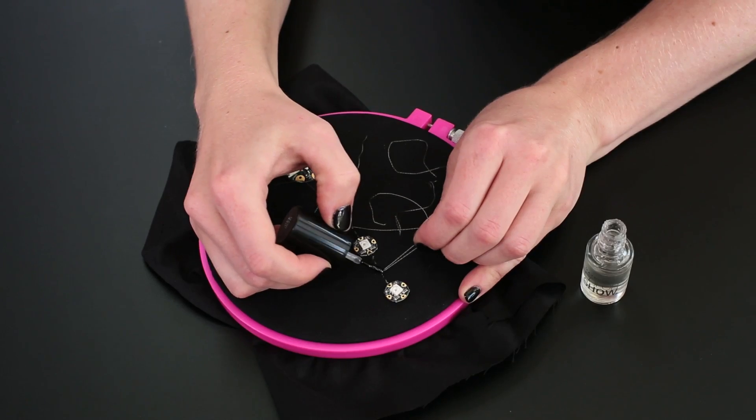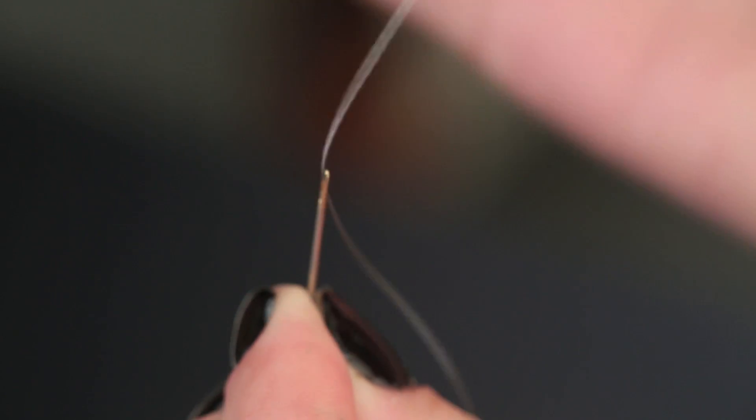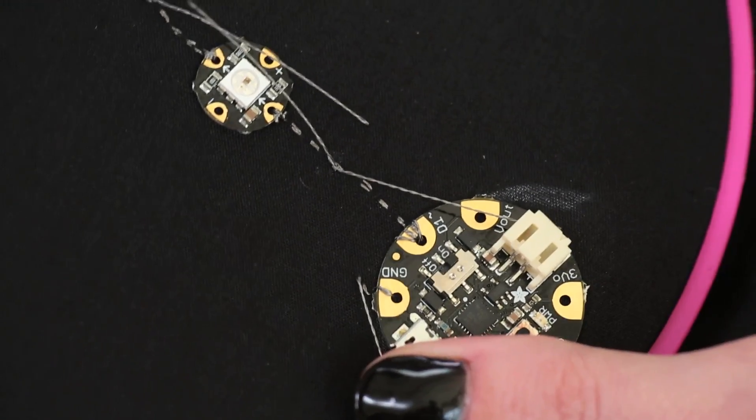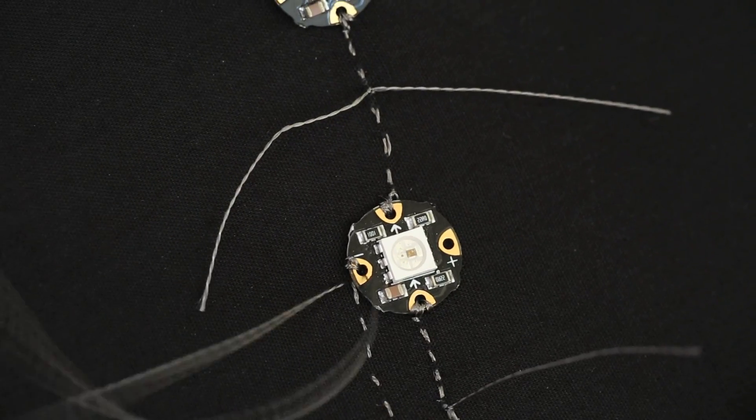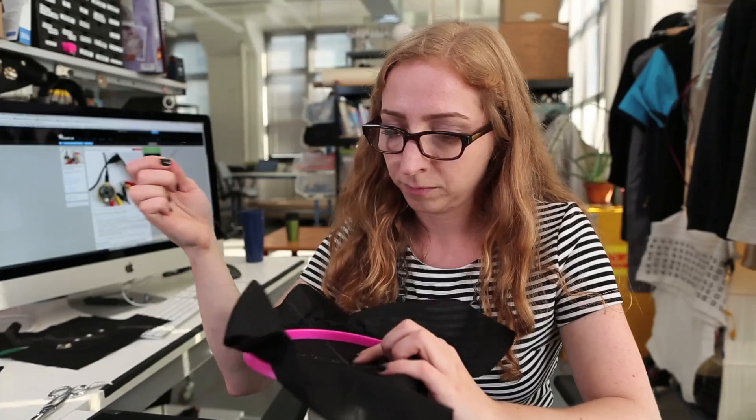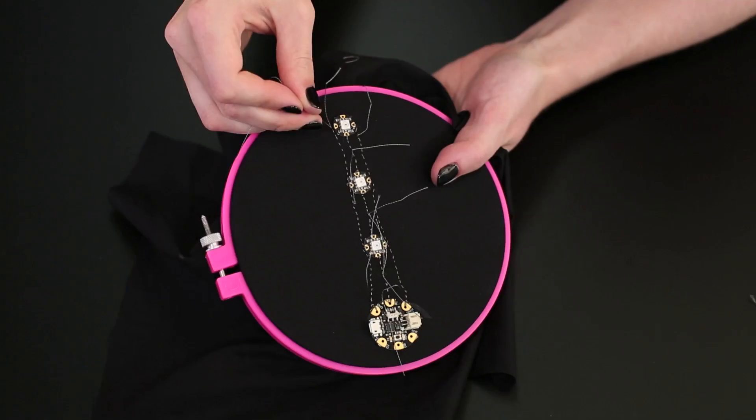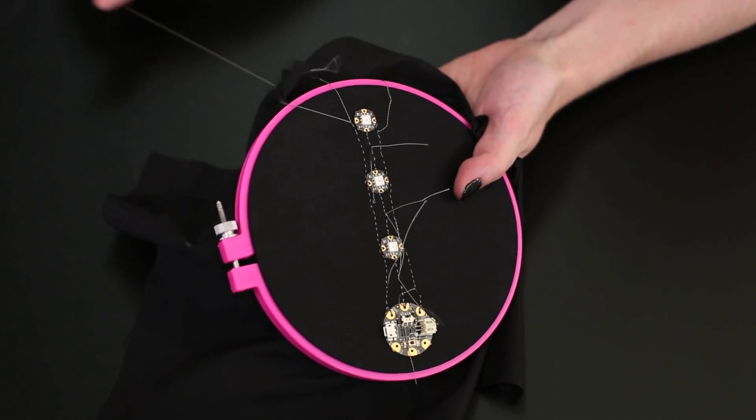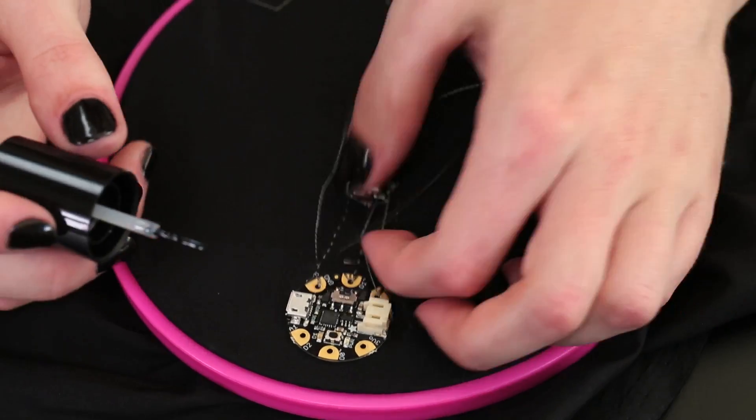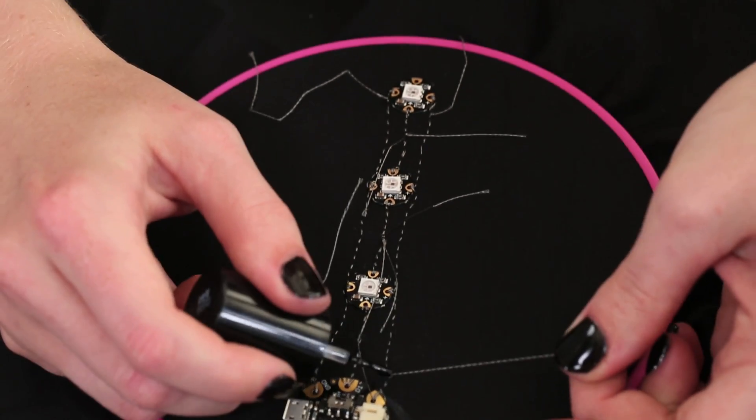After the data connections are done, it's time to stitch power and ground, each of which are done using one long strand to connect up all the positives to Vout and all the negatives to ground. Tie your thread tails into knots nearby, but not directly on the circuit boards, so that no adhesive gets in the way of the electrons flowing from the board to the thread.